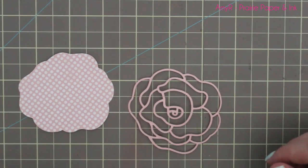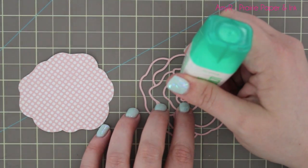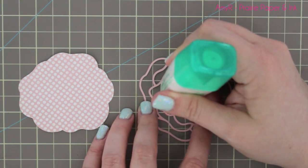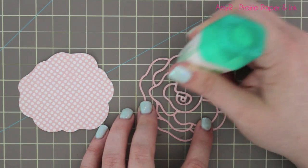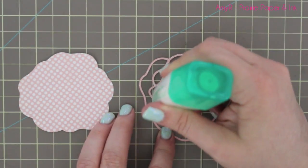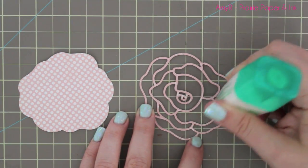I flipped the rose overlay over and I'm just using my Tombow Mono Multi and just dabbing the glue on, barely squeezing at all, because you don't want glue to be oozing out the sides and creating a big mess. I just apply little dabs here and there in the center, in the intersecting areas, and around the edges.